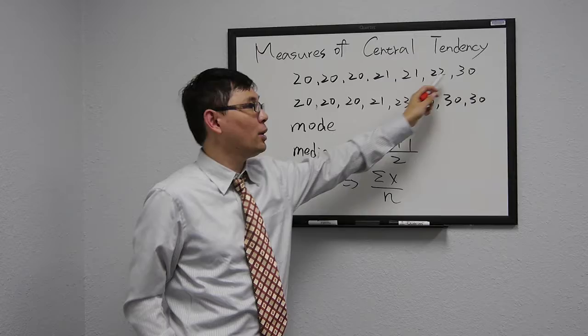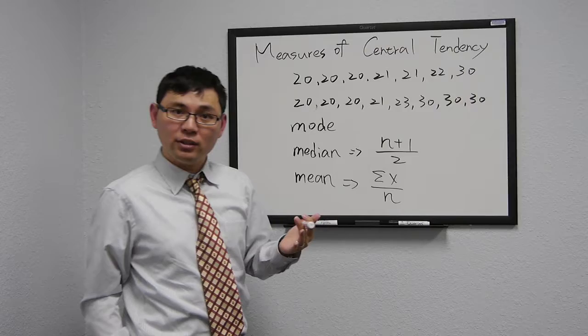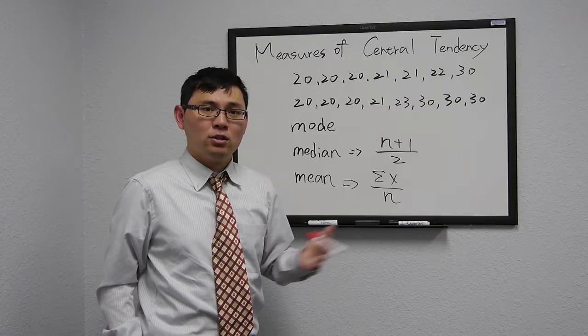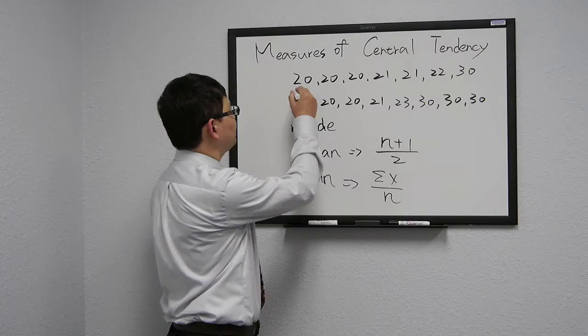In other words, we have three 20s, two 21s, one 22, and one 30. So very obviously, the mode is 20.